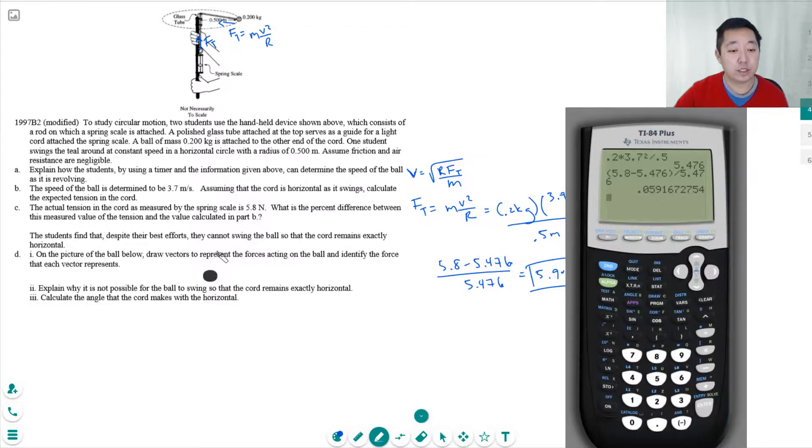The students find that despite their best efforts, they cannot swing the ball so that the cord remains exactly horizontal. On the picture of the ball, draw the velocity that represents the force acting in the ball. Identify the force that each vector represents. Yeah, there's no way they can keep it totally horizontal because there's mg and then they're going to have ft. Because, you see, if it were totally horizontal, then this thing would have a net y acceleration, right? The cord tension needs a y direction, y component to cancel mg.